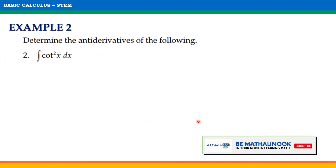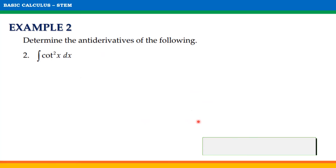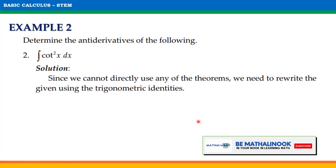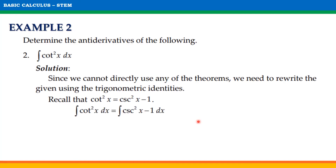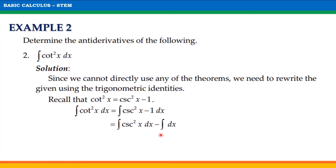Another example: solve for the indefinite integral of cotangent squared x with respect to x. Since we cannot directly use any of the theorems, we need to rewrite the given using trigonometric identities. Recall that cotangent squared x is equal to cosecant squared x minus 1. Thus, our given will be written as the indefinite integral of cosecant squared x minus 1 with respect to x. From here, we will have the indefinite integral of cosecant squared x with respect to x minus the indefinite integral of dx. Applying the theorems, we get negative cotangent x minus x plus the arbitrary constant C.